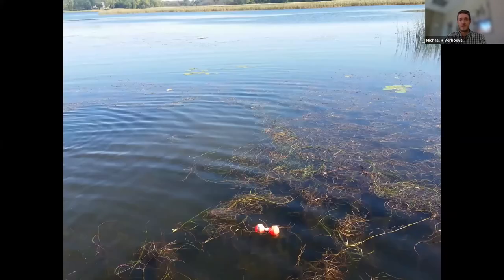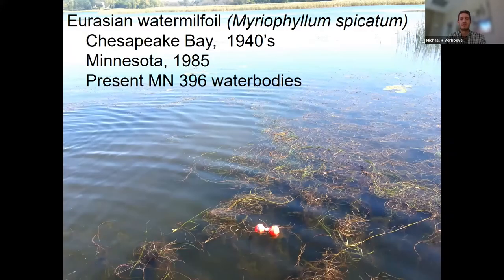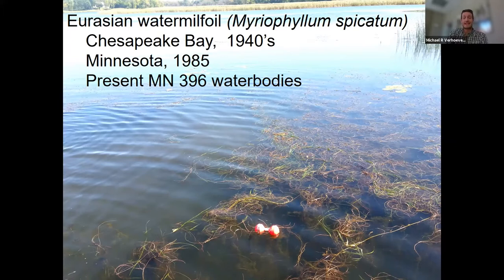Another plant we're going to talk about today is Eurasian watermilfoil. Here's a timeline of its establishment in North America and Minnesota. Similar to curly leaf pondweed, it's known to dominate over native plant communities and also has a high tolerance to algal-dominated states, or high productivity, highly eutrophied lakes.